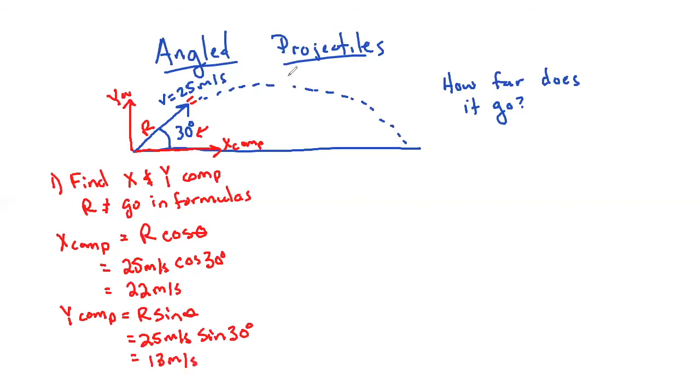That's going to get you enough partial credit already on an angle projectile. So if worse comes to worse, just do that. Find your X and Y components first. Then we can start to worry about how far did it go.